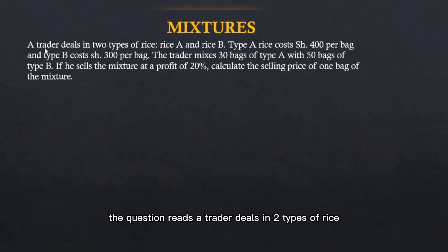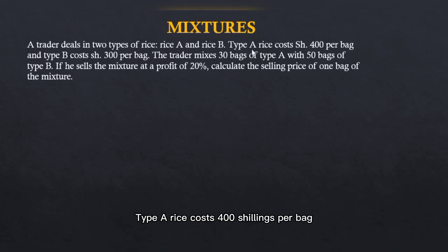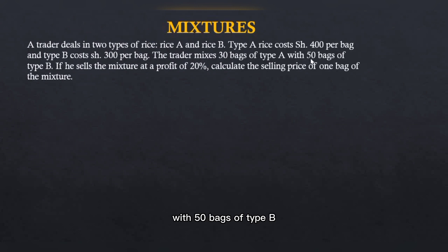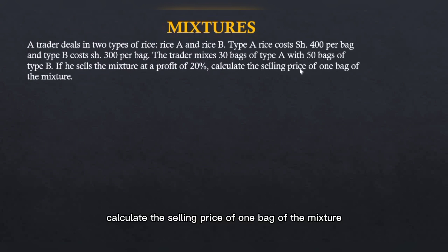The question reads: a trader deals in two types of rice, rice A and rice B. Type A rice costs 400 shillings per bag and type B costs 300 shillings per bag. The trader mixes 30 bags of type A with 50 bags of type B. If he sells the mixture at a profit of 20%, calculate the selling price of one bag of the mixture.